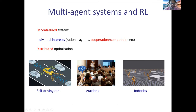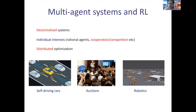Examples include self-driving cars — if you have five self-driving cars on the street, it's really important for these cars to communicate with each other before making decisions. The same happens in auctions — also a multi-agent system — and in robotics. Whenever you have multiple entities that interact, make decisions, with partial information, uncertainty, or some transition probability model, you have this sort of multi-agent Markov decision process.